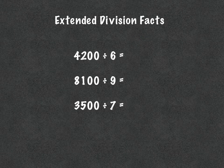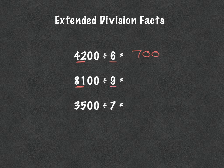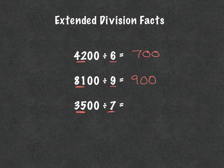So if I was looking at these: 42 divided by 6 — same thing. If I think about my place value disks, this is 7 and it's in the hundreds place, so 6 times 700 would equal 4,200. Next, I've got 8,100 divided by 9. So 81 divided by 9 is 9, and 900 times 9 would equal 8,100. Then I've got 3,500 divided by 7. So 35 divided by 7 is 5, and 500 times 7 would be 3,500.